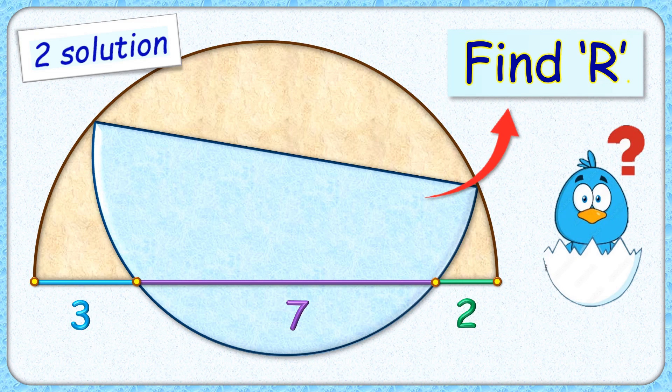Hello everyone, welcome to this interesting question where we have two semi-circles intersecting each other such that the blue semi-circle is cutting the diameter of brown semi-circle in lengths 3, 7 and 2 cm.